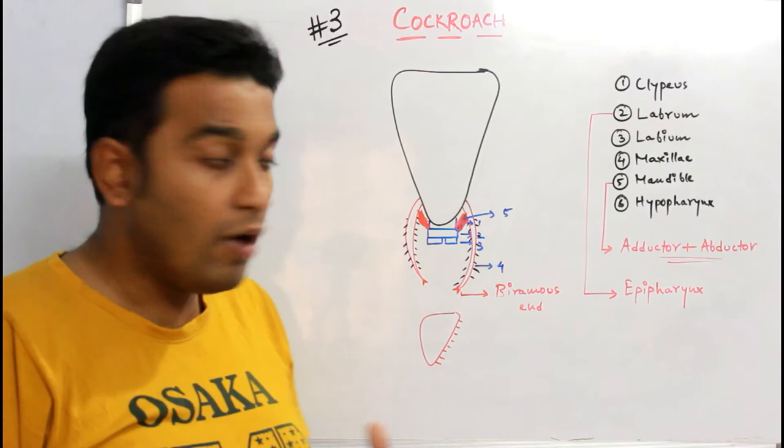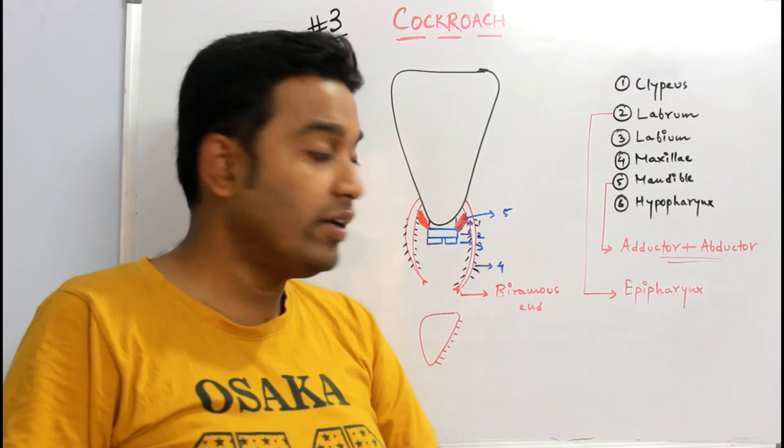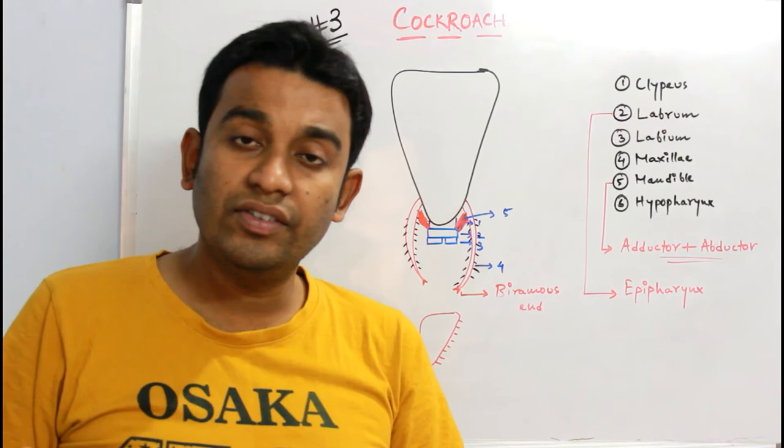Also remember the mandible, the lower jaw which is movable, becomes movable by these two muscles: adductor and abductor, important name for the exams. Last but not least, once again for the hypopharynx, most important function is it's regarded as a tongue and through this hypopharynx the saliva will be oozing out.